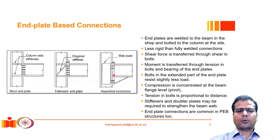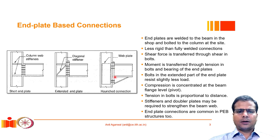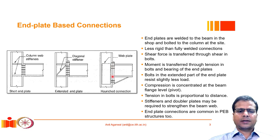The haunch provides the required stiffness to the plate so it does not bend, allowing us to increase the lever arm. Generally in all these connections the end plate is welded to the beam in the shop, and the entire setup is brought to the site. At site, the beam with its end connection is aligned with the column and the bolts are placed. Because bolts have a longer effective length than welds, these connections are typically more flexible than direct-welded connections, but they offer the advantage of being opened and inspected at a later stage.